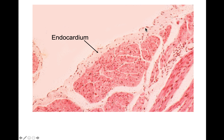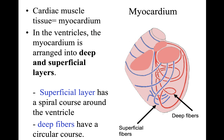Looking at the slide, we can see the simple squamous epithelium and the area of the subendocardium. There are two layers: the subendothelial layer with dense irregular connective tissue, and the subendocardial layer with loose connective tissue containing Purkinje fibers. The second major layer is the myocardium, which contains cardiac muscle arranged into a superficial layer and a deep layer.